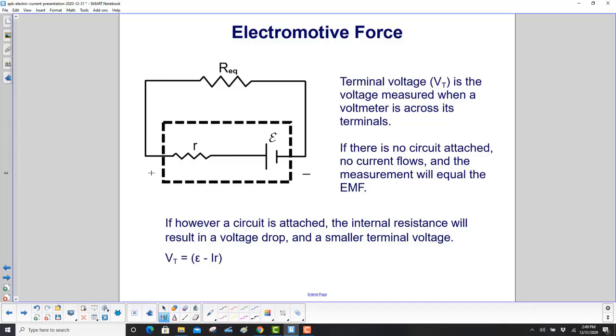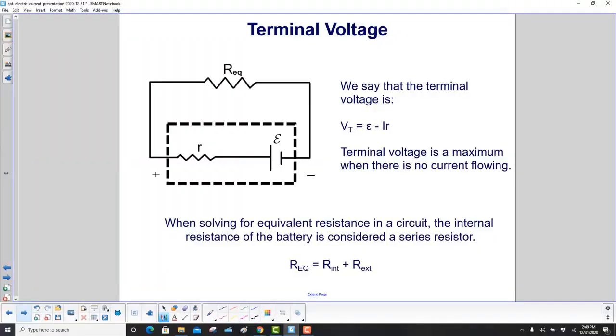Terminal voltage (V_T) is the voltage measured when a voltmeter is connected across the terminals of the battery. If there is no circuit attached, no current flows and the measurement will equal the EMF. If, however, a circuit is attached, the internal resistance will result in a voltage drop and a smaller terminal voltage. We can say that the terminal voltage V_T equals EMF minus Ir. It is maximum when there is no current flowing—if there's no current, V_T would equal the max EMF.